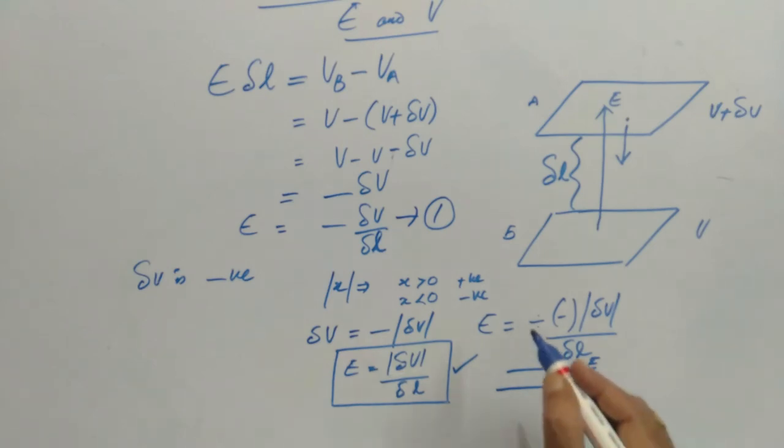The magnitude of electric field is nothing but the change in potential per unit length. So E equals change in potential per unit length.